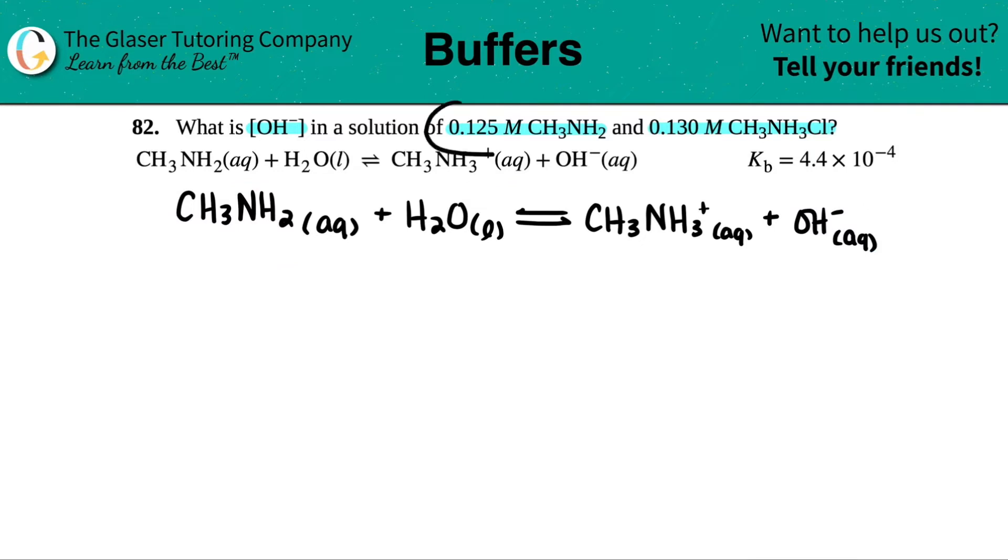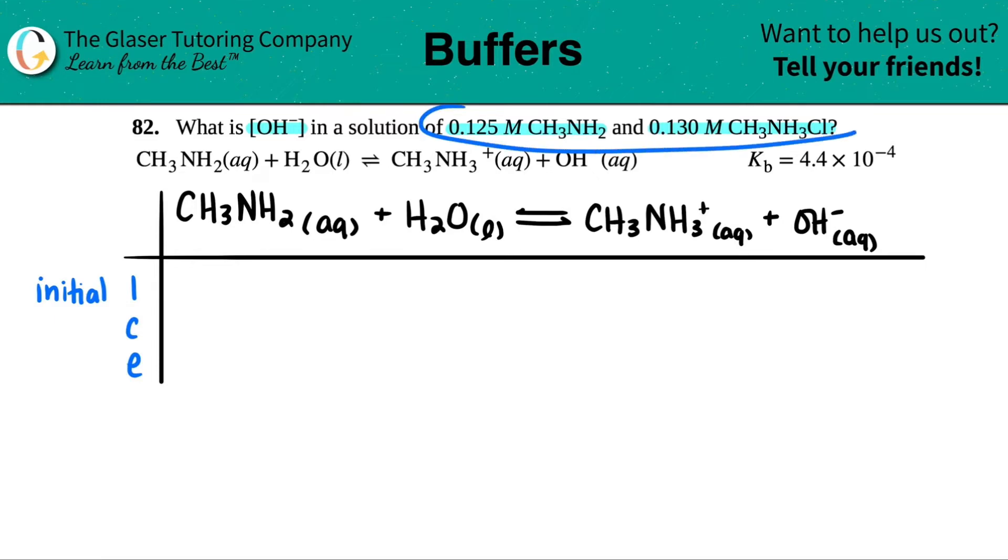Now they did say that we're starting off with two concentrations, right? This is the initial solution that didn't come to equilibrium. So I'm just going to use an ICE table. ICE it up. I stands for initial. So all those initial concentrations. Now here they said that we had 0.125 molar of CH3NH2, and that's right here. So that's what I'm going to put, 0.125.